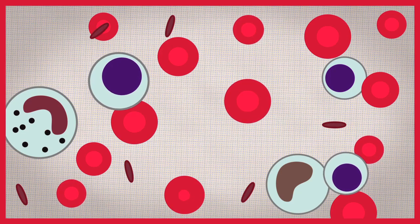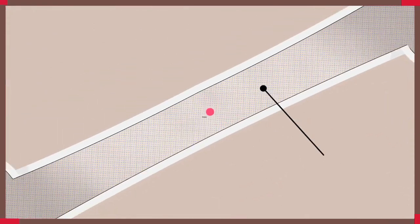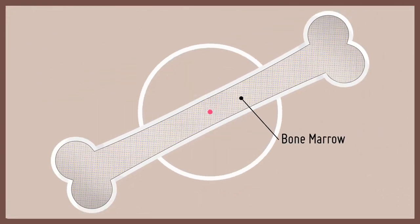New blood cells are produced by hematopoietic stem cells. These rare cells are found in the hollow part of bones called the marrow.